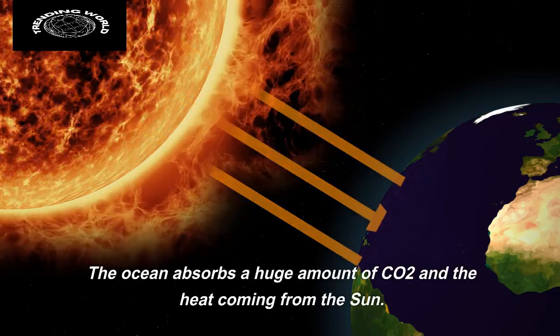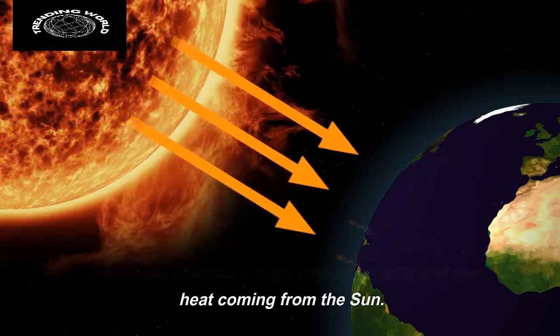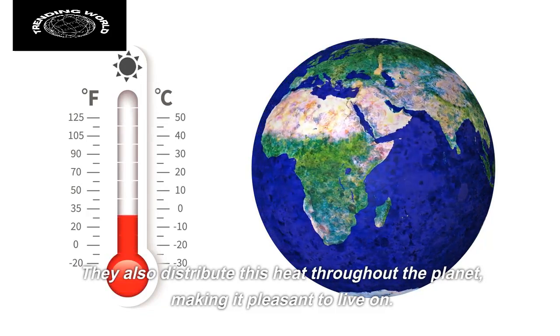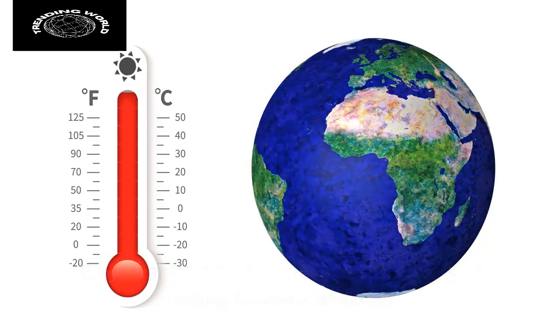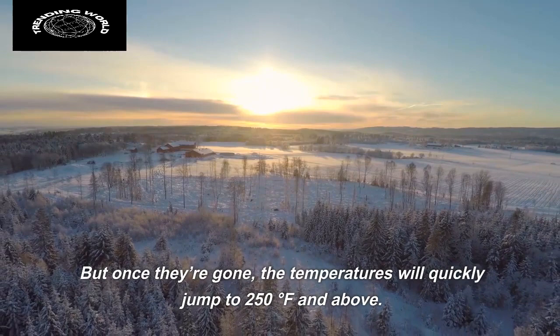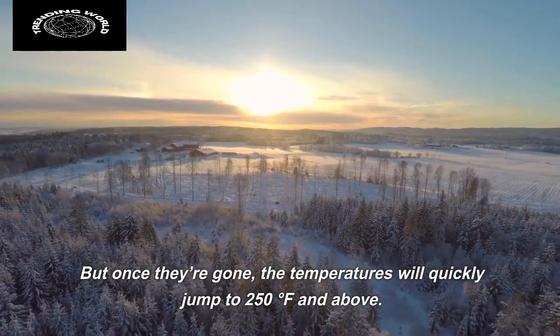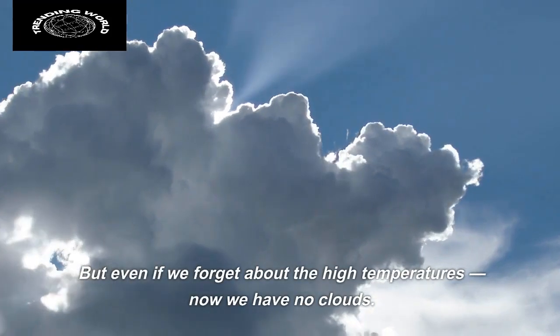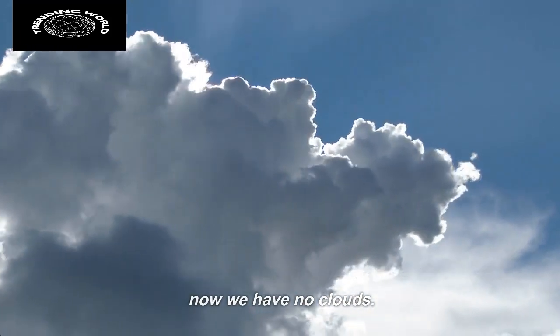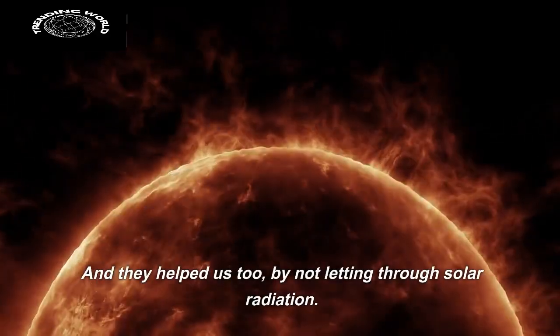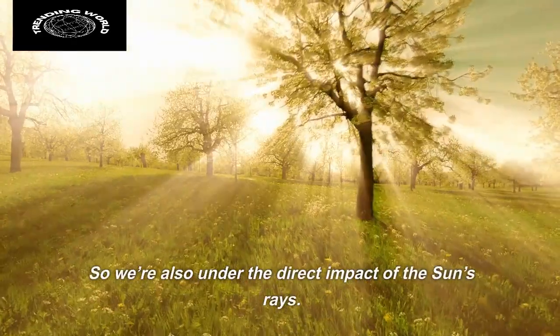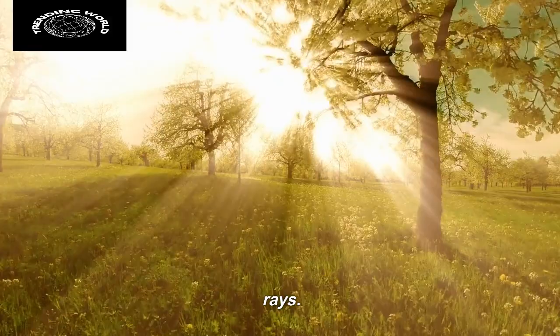The ocean absorbs a huge amount of CO2 and the heat coming from the sun. They also distribute this heat throughout the planet, making it pleasant to live on. But once they're gone, the temperatures will quickly jump to 250 degrees Fahrenheit and above. But even if we forget about the high temperatures, now we have no clouds. And they helped us too, by not letting through solar radiation. So we're also under the direct impact of the sun's rays.